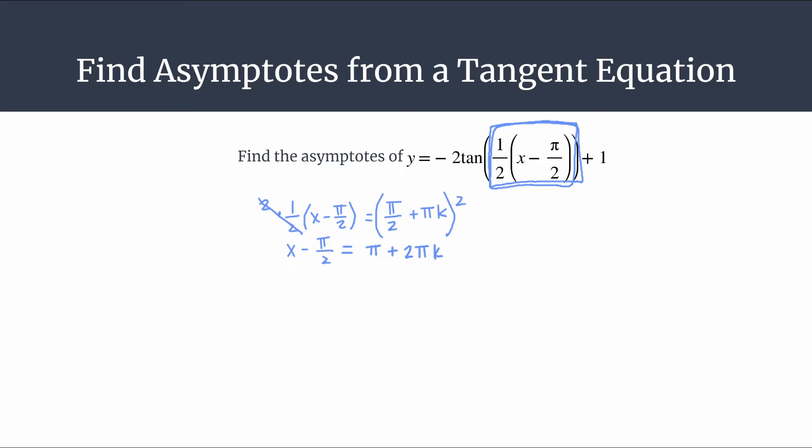Alright, and now to isolate x we just need to add pi over 2 to both sides. And this is what I was talking about, the k term you can't really add or subtract anything to it unless it also has a k. So when we add pi over 2 to both sides, we only can add pi over 2 to the pi term. Okay, those are like terms.